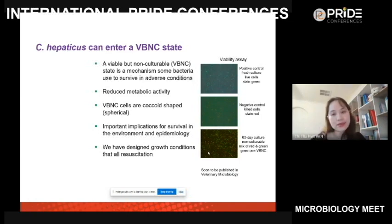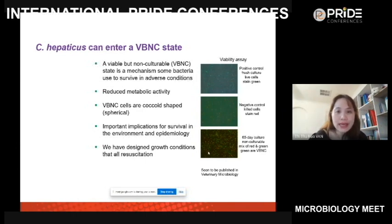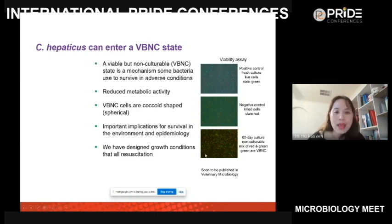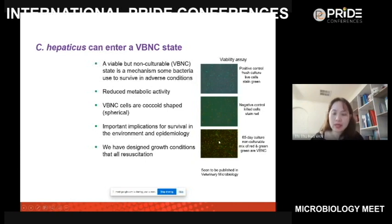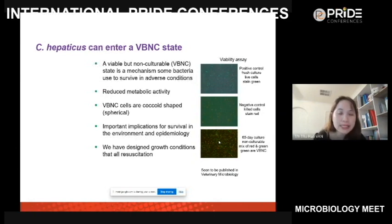Another student investigated whether C. hepaticus can enter a viable but non-culturable (VBNC) state — where bacteria are still present and alive but cannot be cultured. When conditions improve, they can come back and thrive. We found that VBNC cells are coccoid in form, and for 65 days they are still alive and can regrow when conditions improve. This explains why C. hepaticus can survive on farms and be transferred between farms even in harsh environments, even though it is very hard to grow in the lab.